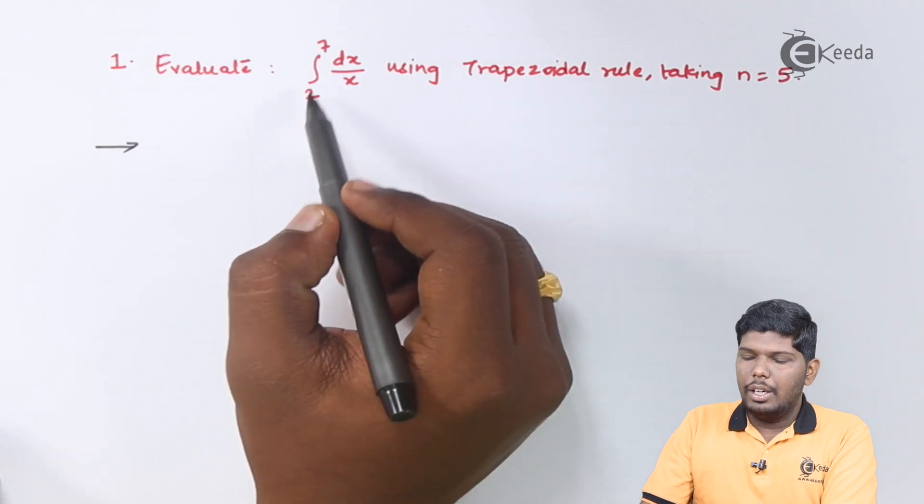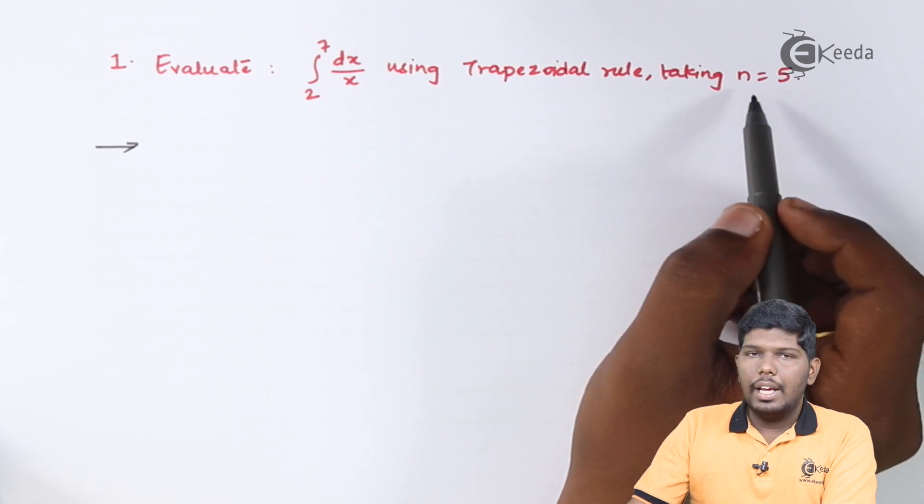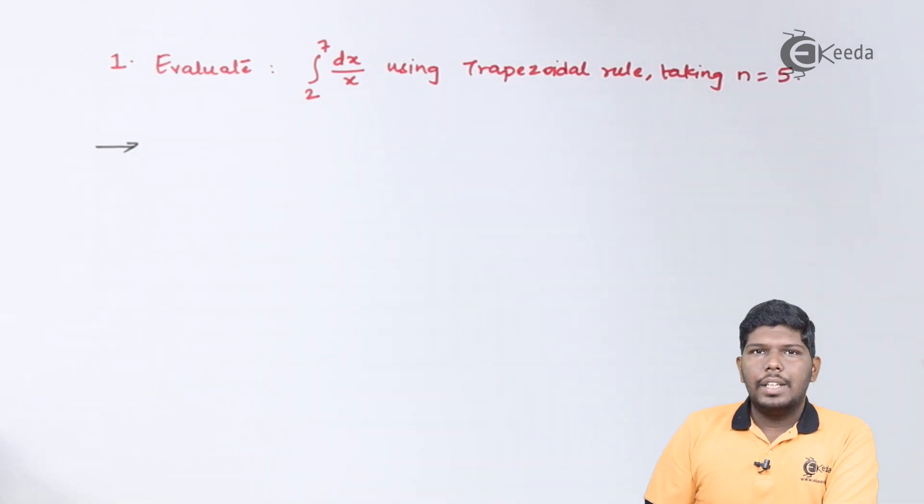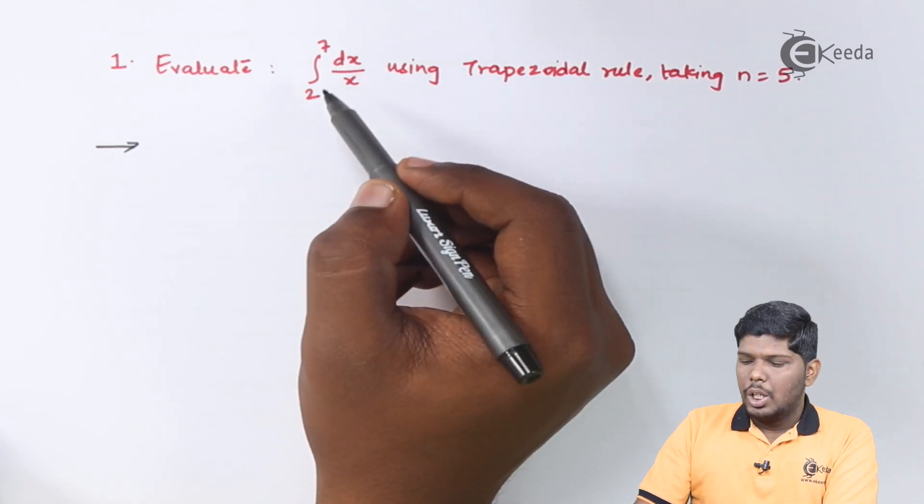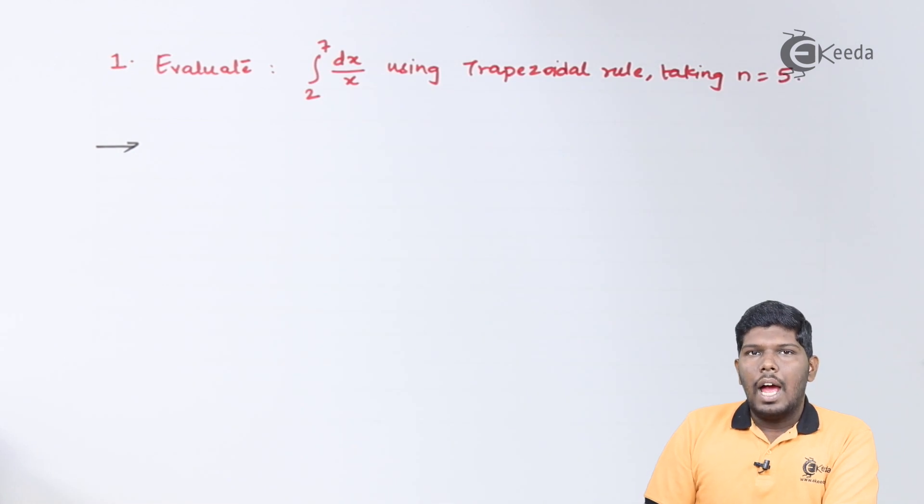Evaluate integral 2 to 7 dx upon x using trapezoidal rule taking n equals 5. Value of n represents the number of intervals that should be taken from 2 to 7. So 2 to 7 needs to be divided in 5 equal parts and the difference between the two intervals is given by the formula h equals b minus a upon n.